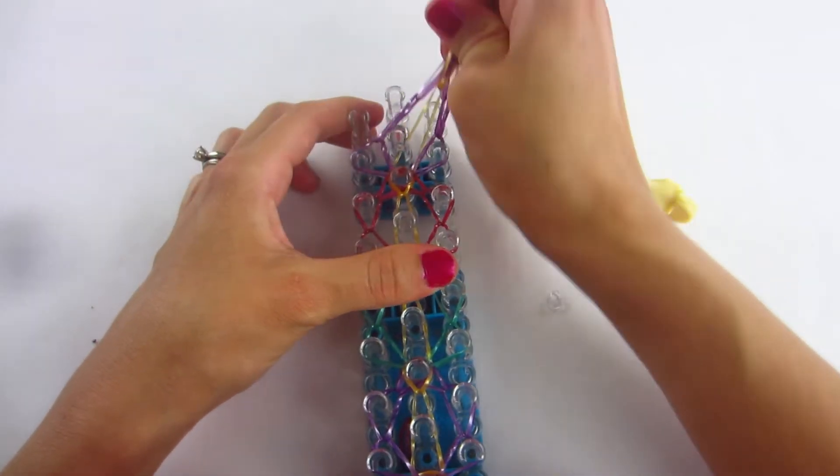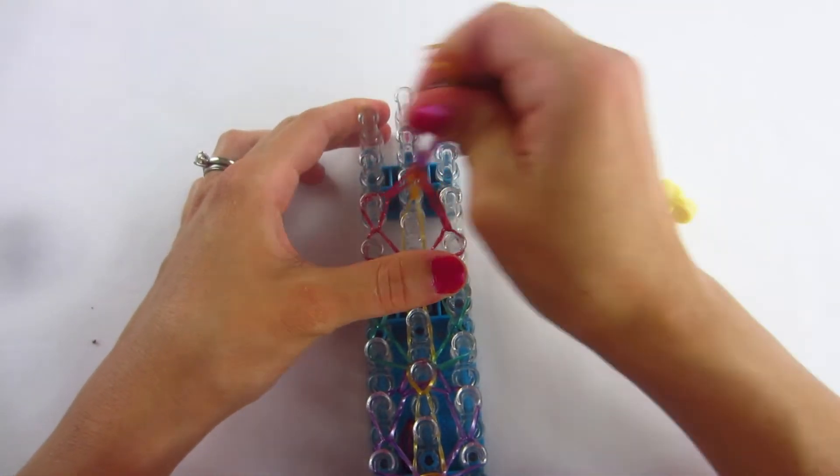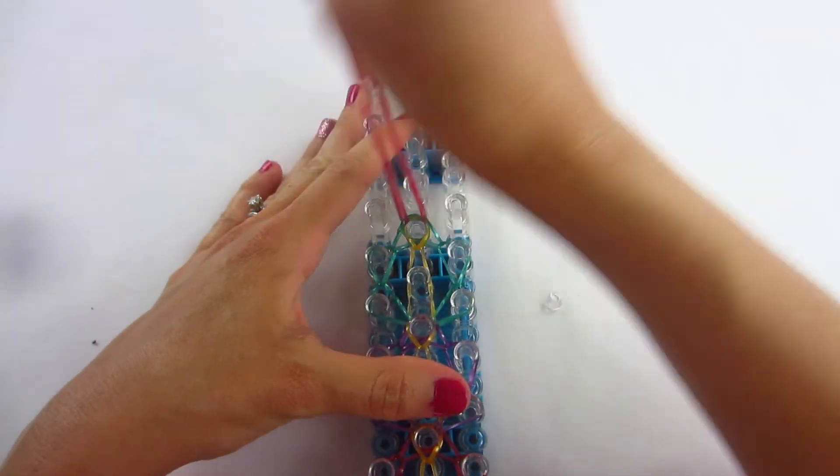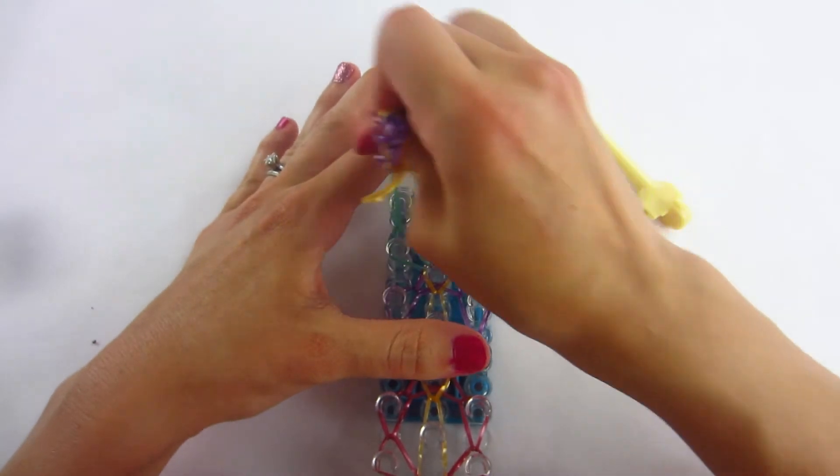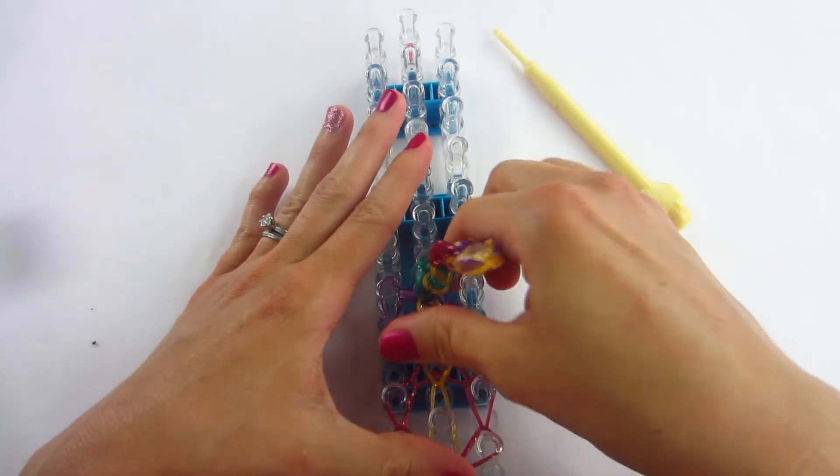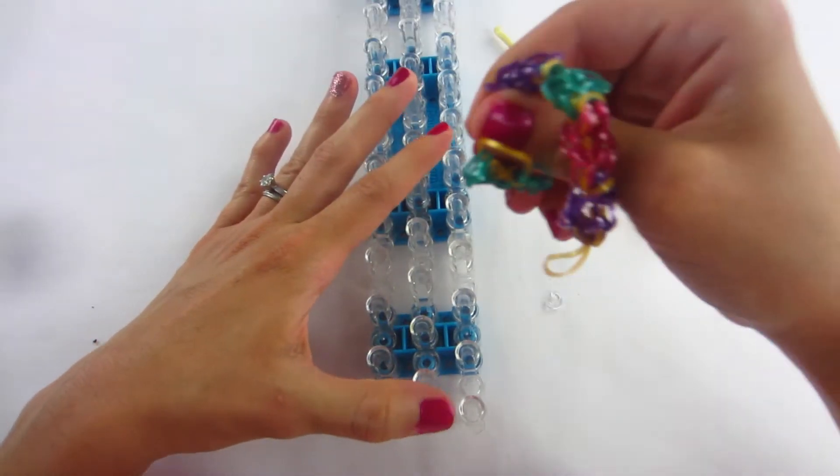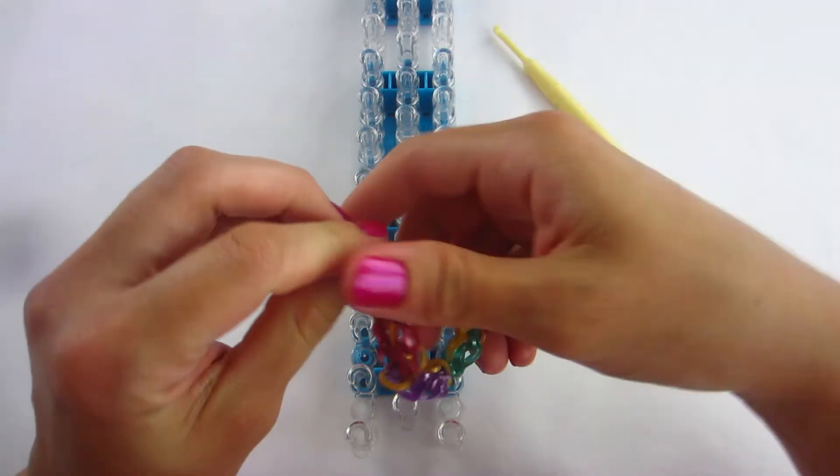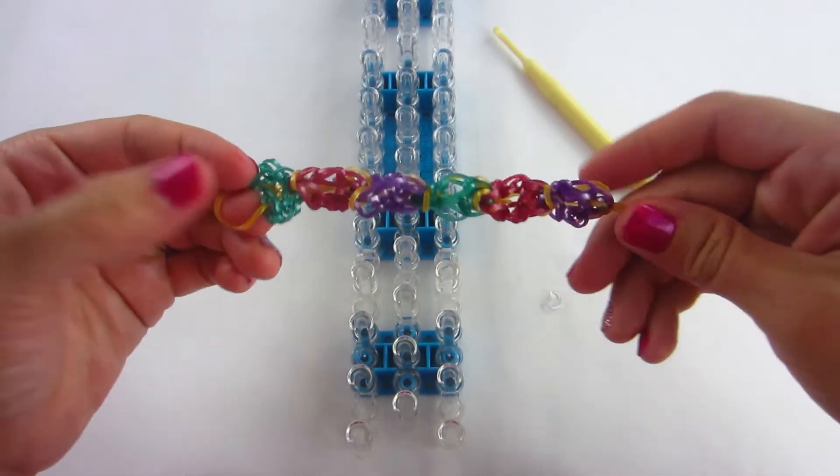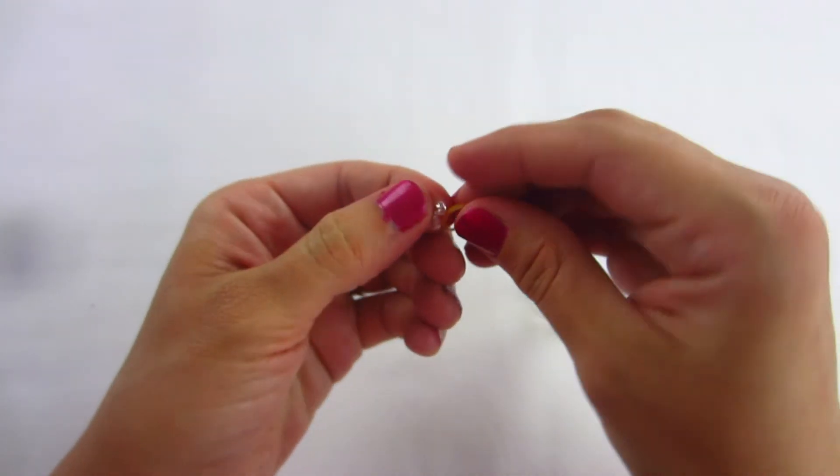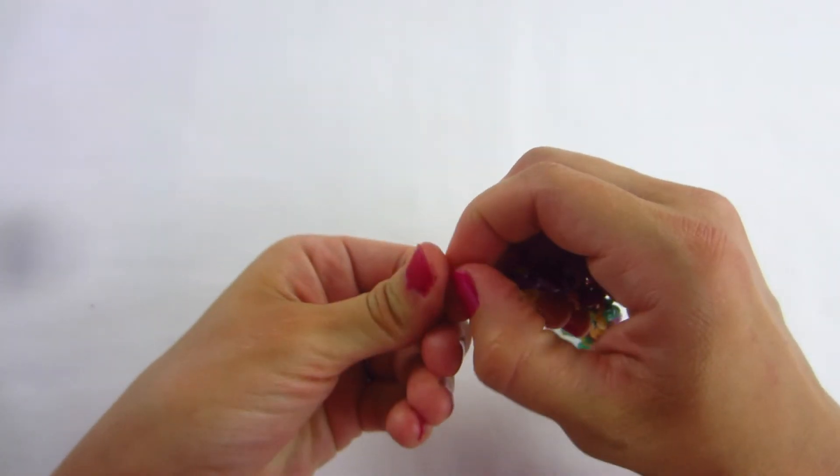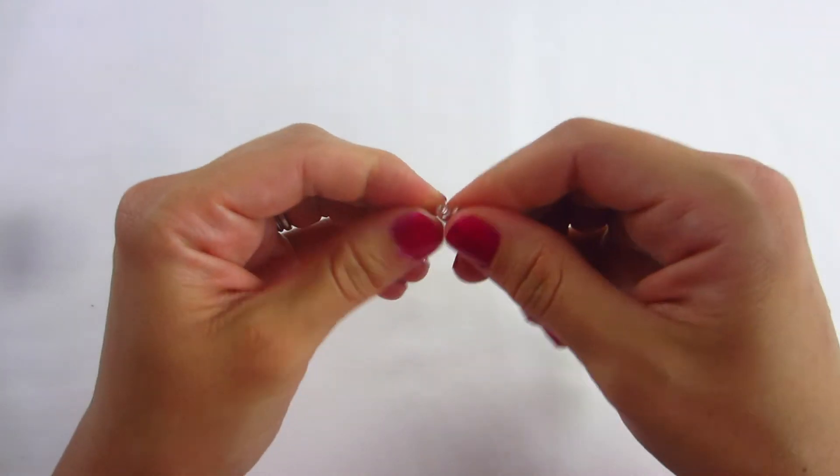Alright, now you can start taking off your bracelet. And there you go, here's your Octo Bracelet. Let's go ahead and hook our C-clip on to both ends.